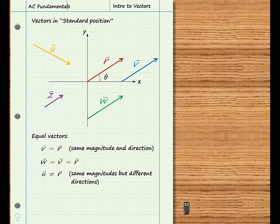Although vector Z has the same direction as vectors R, V, and W, it has a different magnitude, so it is not equal to any of the other vectors.